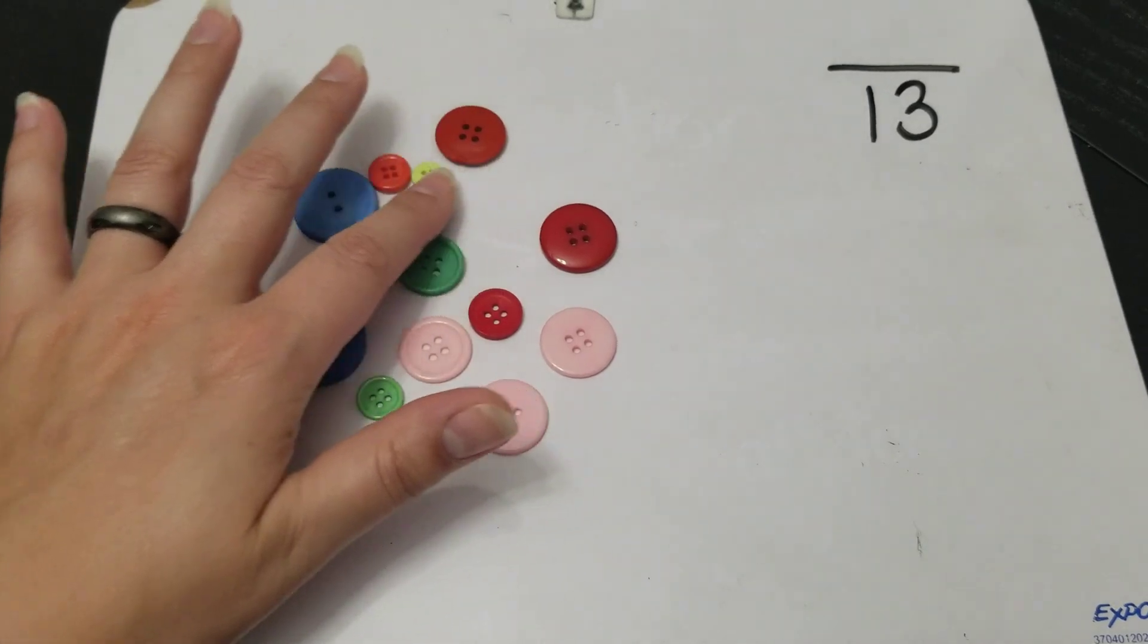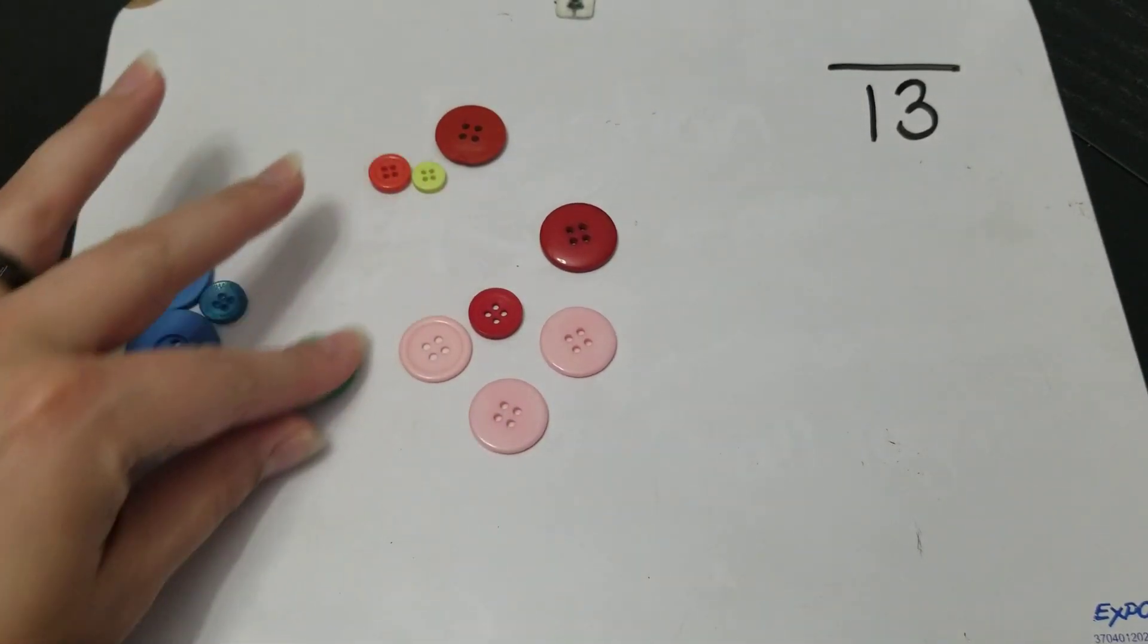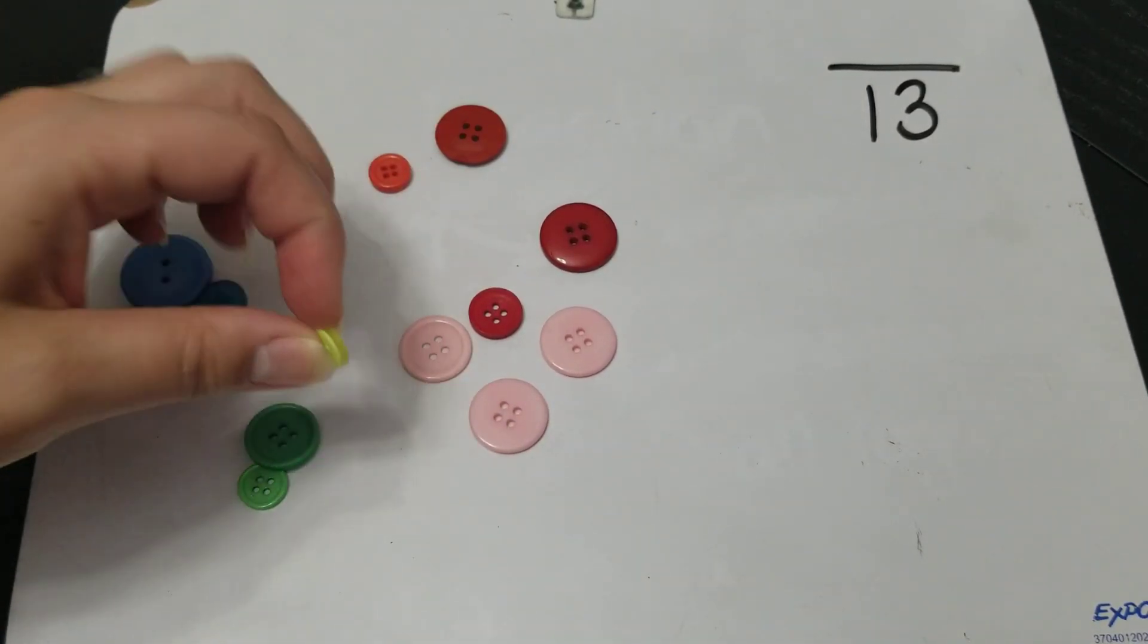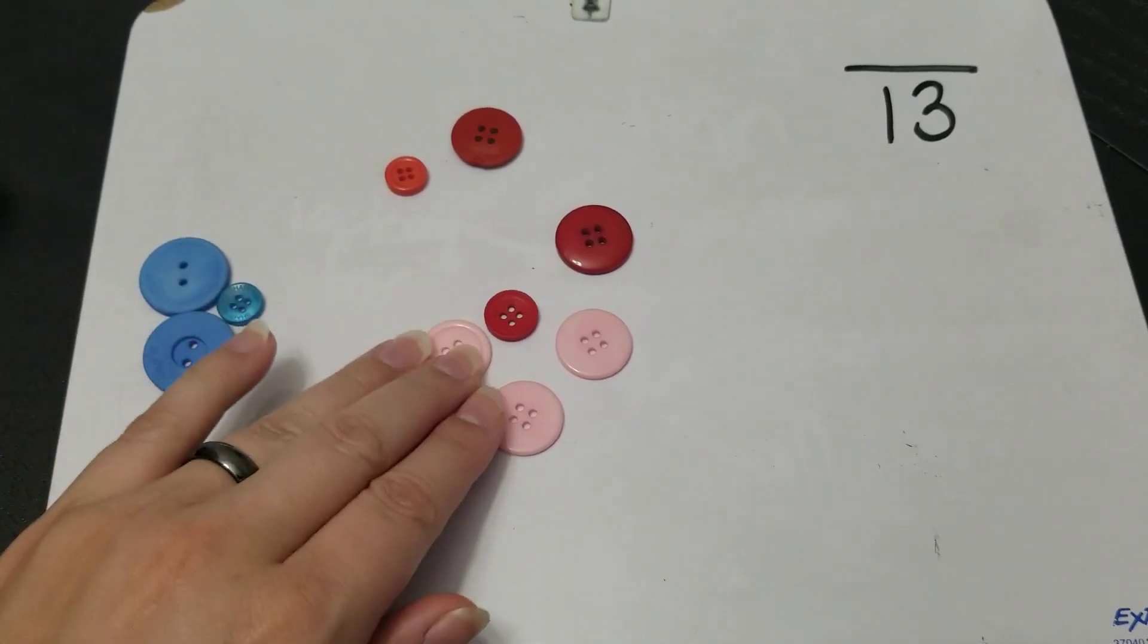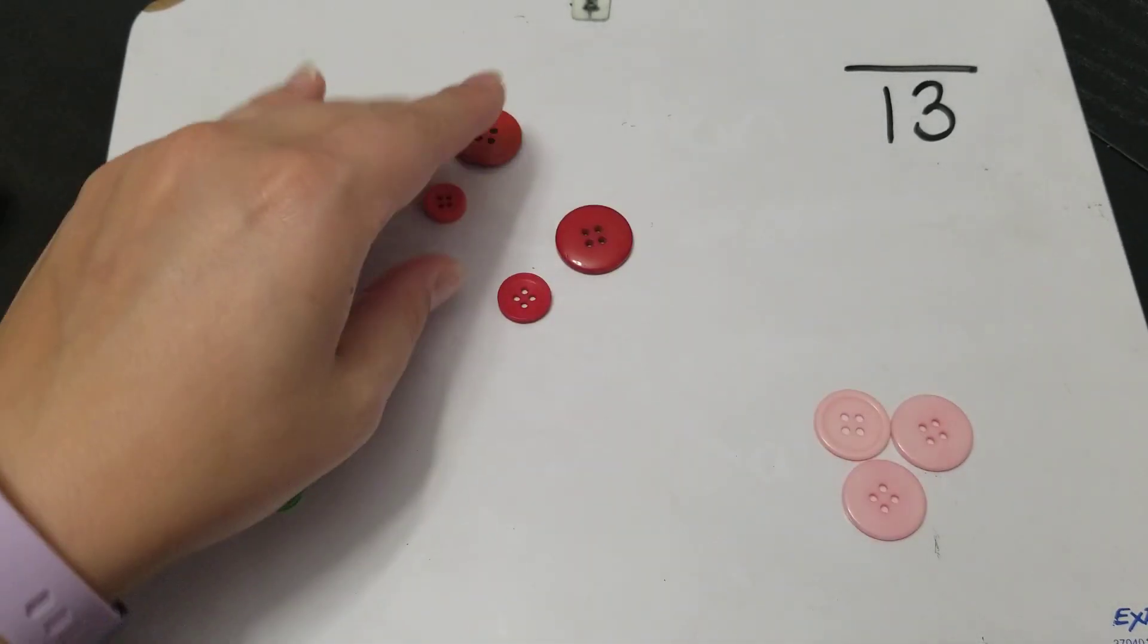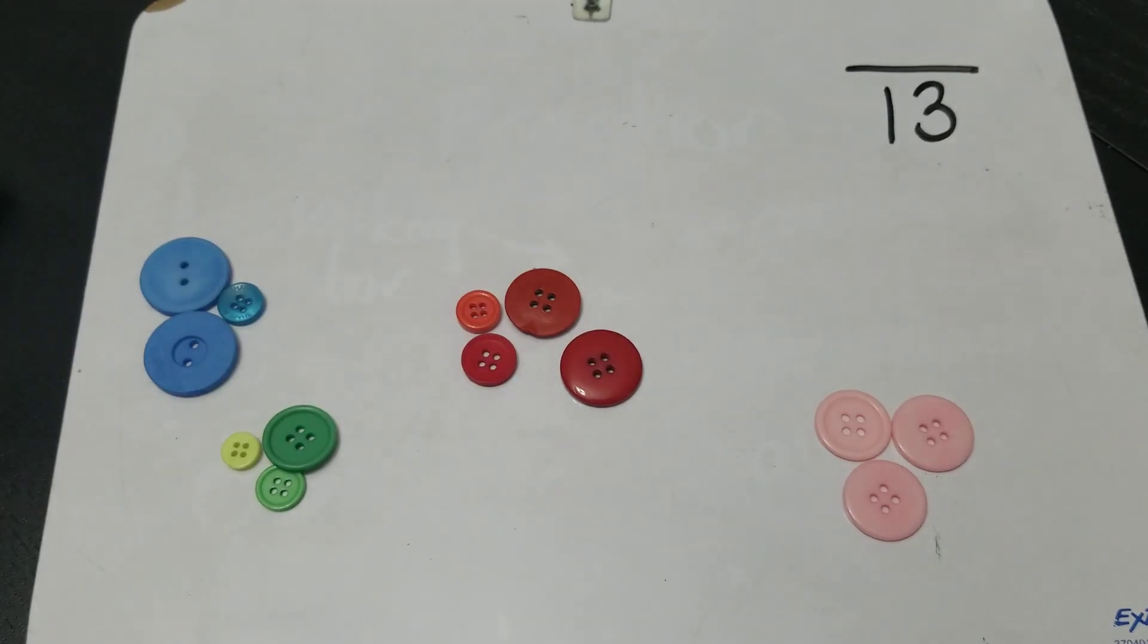I'm going to separate mine by color. I have three of those. That one's green. It's just a different green. Three pink ones and four red ones. Looks like my buttons are separated.